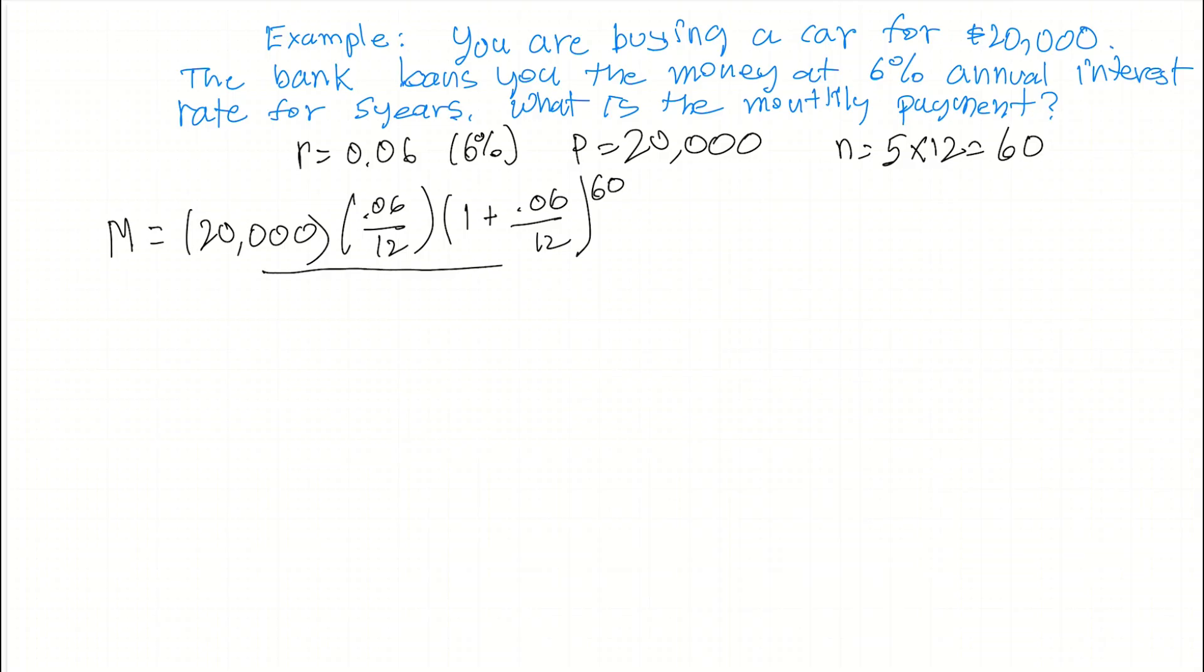We divide all of this now by the quantity 1 plus 0.06 divided by 12, raised to the 60th minus 1. Okay, let's do some intermediate calculations here to make this simpler.